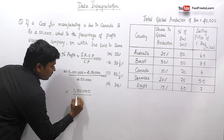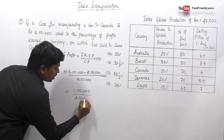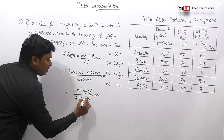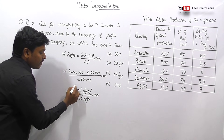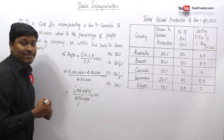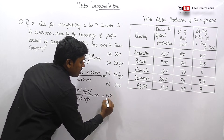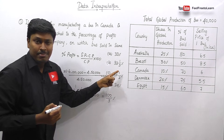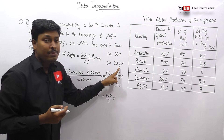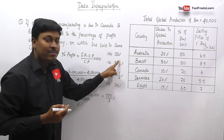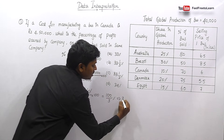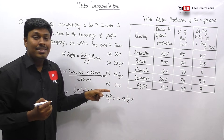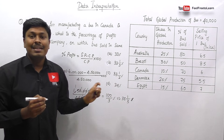So 1,50,000 divided by 4,50,000 into 100. We can cancel the zeros. 15 divided by 45 — cancelling by 15 gives 1 over 3. So 1 into 100 divided by 3 equals 100 by 3 percent. This can be written as 33 and 1/3 percentage in mixed fraction, since 33 × 3 = 99 and 99 + 1 = 100.